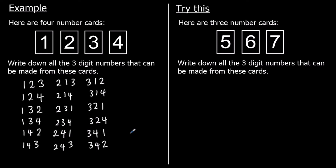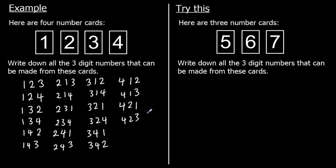And finally, I could have four hundreds. With four in the hundreds and one in the tens, there are two options: four hundred and twelve or four hundred and thirteen. With four in the hundreds and two in the tens, four hundred and twenty one or four hundred and twenty three. And finally, with four in the hundreds and three in the tens: four hundred and thirty one or four hundred and thirty two. So there are all the different options.